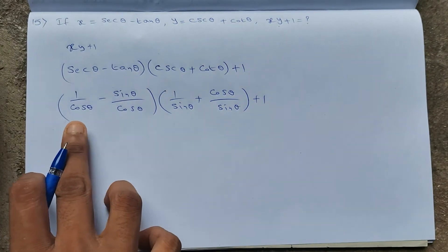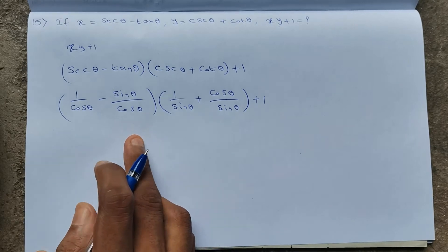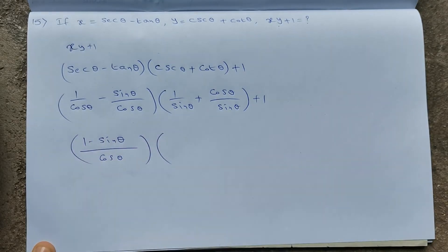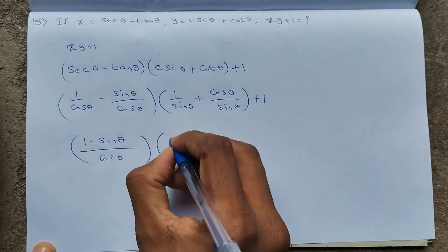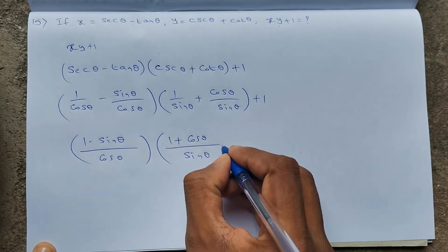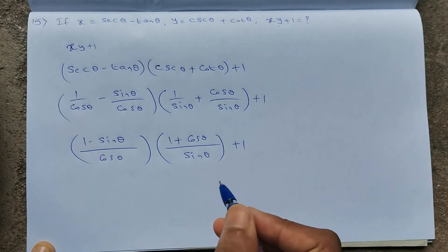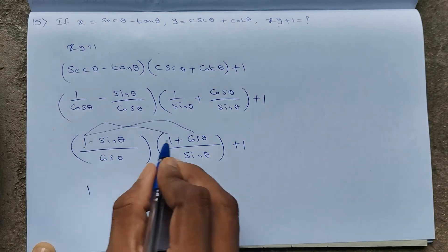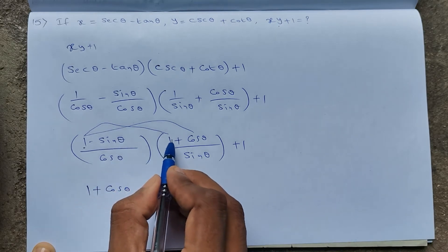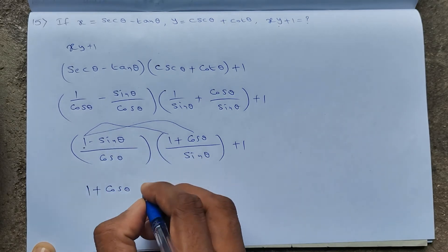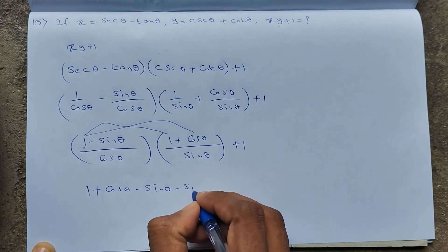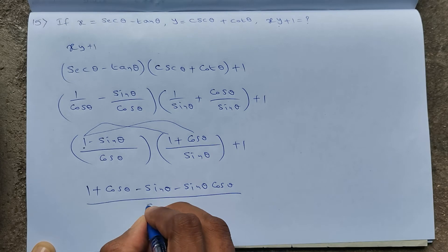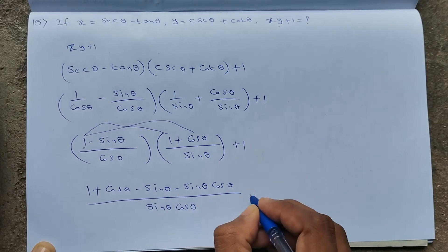Multiplying the fractions: numerator = (1)(1) + (1)(cosθ) − (sinθ)(1) − sinθ cosθ = 1 + cosθ − sinθ − sinθ cosθ. Denominator = cosθ sinθ. Adding the +1: the full expression becomes (1 + cosθ − sinθ − sinθ cosθ + sinθ cosθ) / (sinθ cosθ).